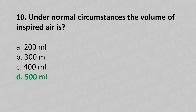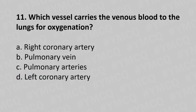Now let's move to question number eleven. Which vessel carries the venous blood to the lungs for oxygenation? Option a, right coronary artery; option b, pulmonary vein; option c, pulmonary artery; option d, left coronary artery. And the answer is option c, pulmonary artery.